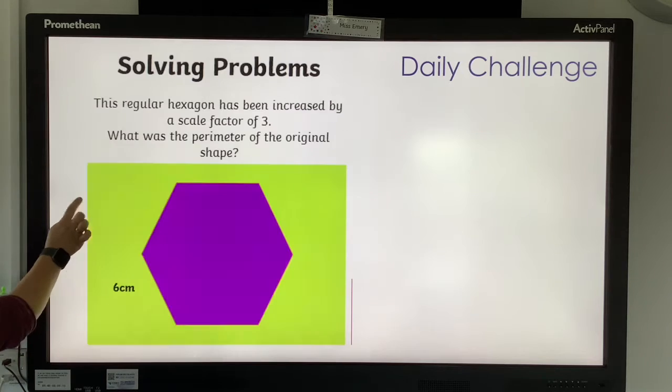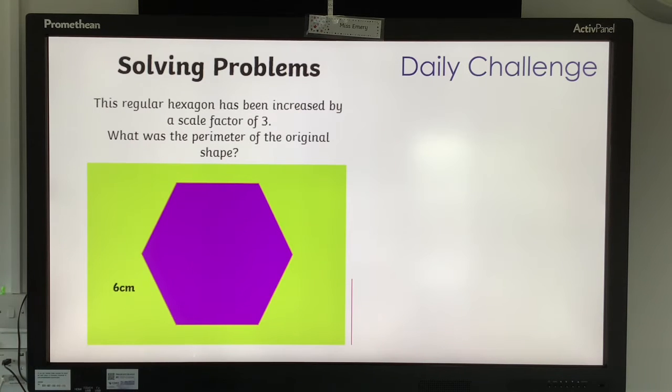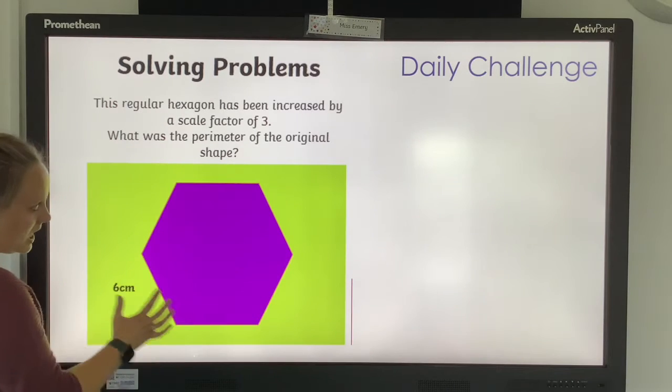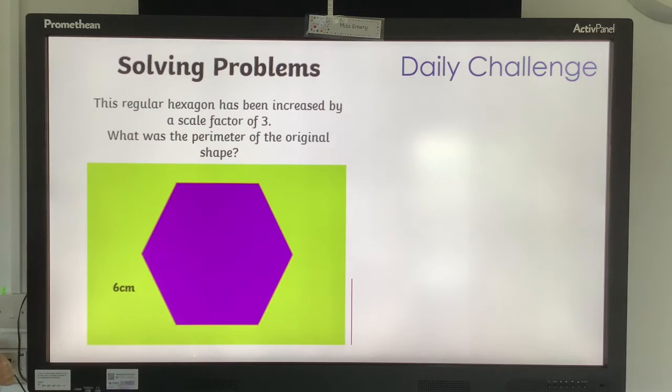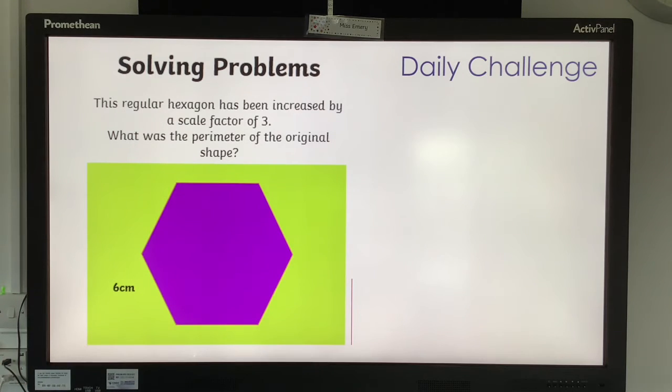And the next one. This is a regular hexagon and it has been increased by a scale factor of 3. So this is it, after it has been increased by a scale factor of 3. What was the perimeter of the original shape? So this requires you to know something about regular hexagons and perimeter.